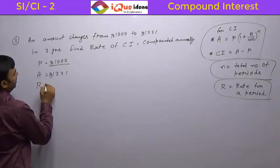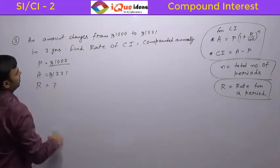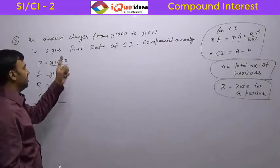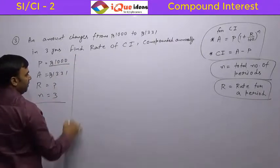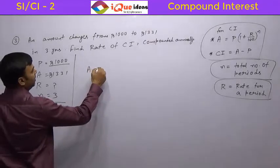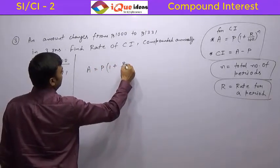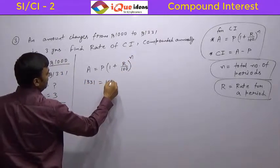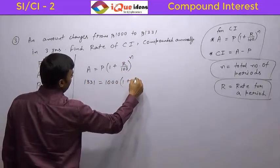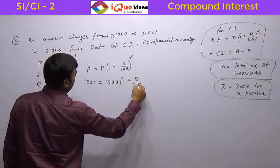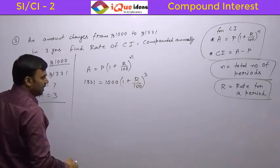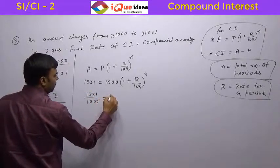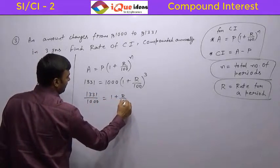R we have to calculate, right? And N is given as 3. Why? Because annual and three years, so N is straight to be equal to 3. We can directly apply the formula A is equal to P into 1 plus R by 100 to the power N. A is 1331, P is 1000, 1 plus R by 100 to the power 3. Now, 1331 upon 1000 is equal to 1 plus R by 100 to the power 3.